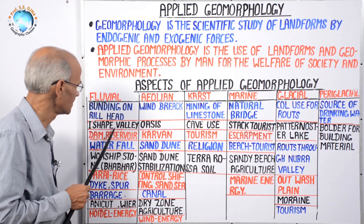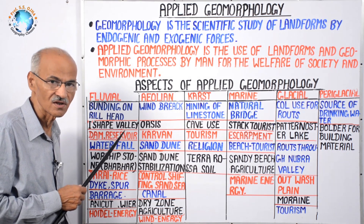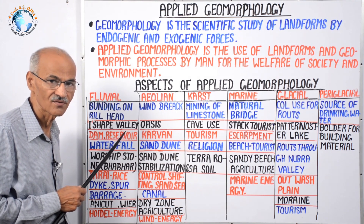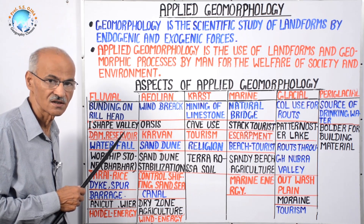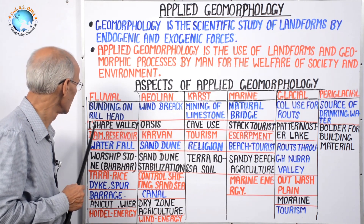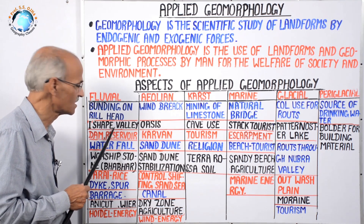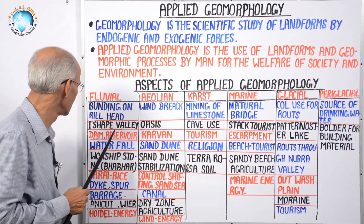Second is the V-shaped valley, formed by antecedent rivers on folded mountains. Rivers like the Colorado, Indus, Satlaj, and Brahmaputra cut through rising mountains. This V-shaped valley is a center of tourism — that is applied geomorphology.